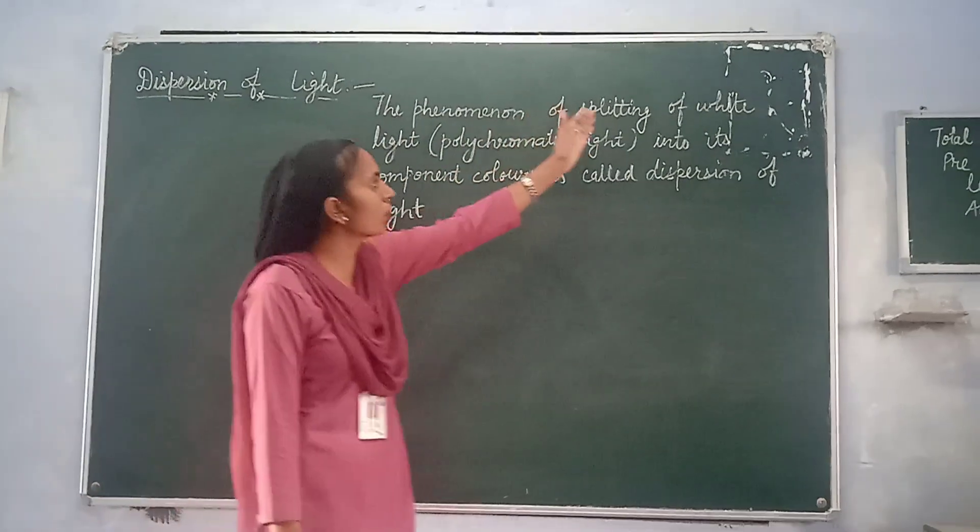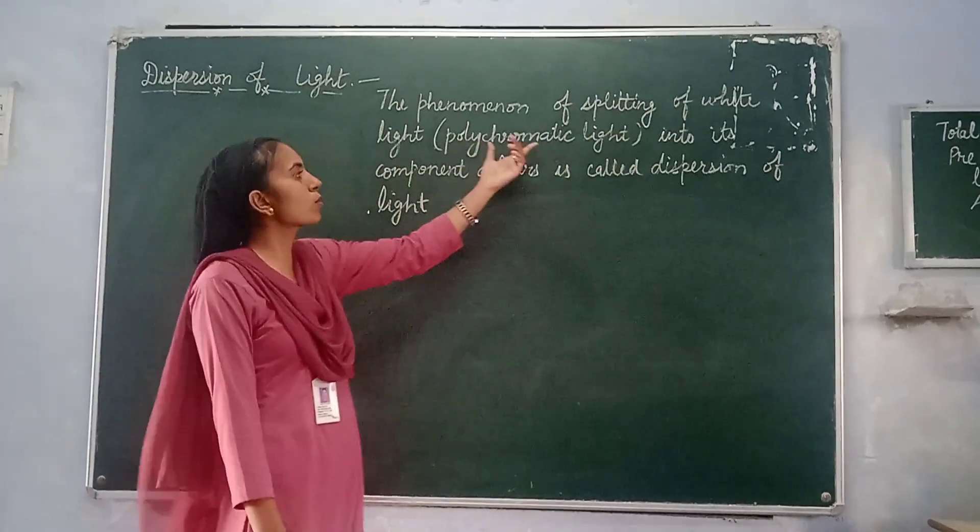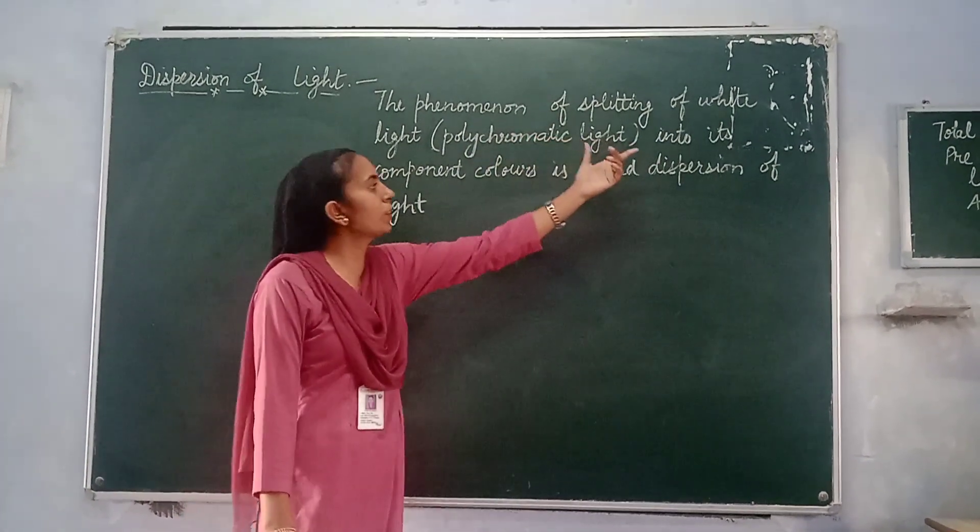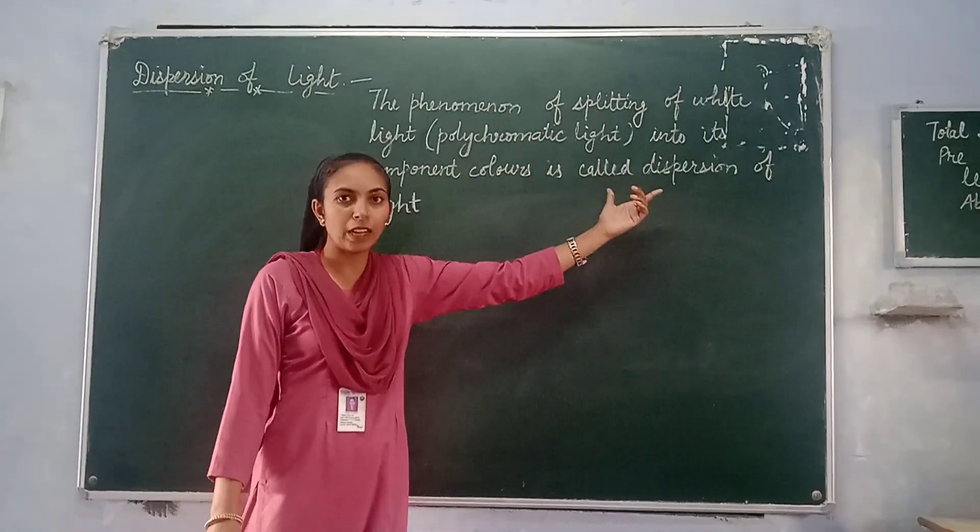The phenomenon of splitting of white light, which is also called polychromatic light, into its component colors is called dispersion of light.